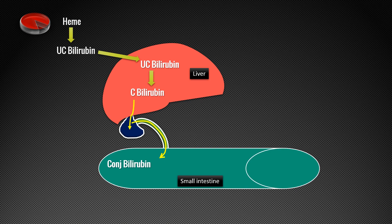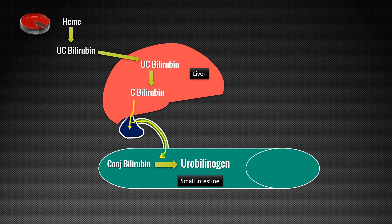The common bile duct also carries pancreatic enzymes and juice. Once bile reaches the small intestine, especially the duodenum, normal bacterial flora present there convert conjugated bilirubin to urobilinogen. The majority of this urobilinogen — about 80 to 90 percent — is converted to stercobilinogen and excreted as stercobilin in the feces.